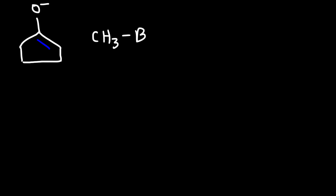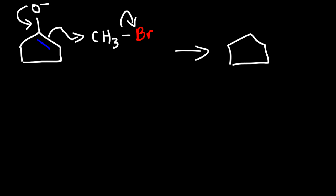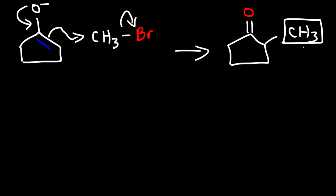In the next step, we take one of the two resonance forms — it really doesn't matter which one — and react it with methyl bromide. The electrons reform the pi bond, causing this pi bond to break, attacking the methyl group and expelling the bromide ion. This is how we can alkylate a ketone — adding a methyl group to the alpha carbon.